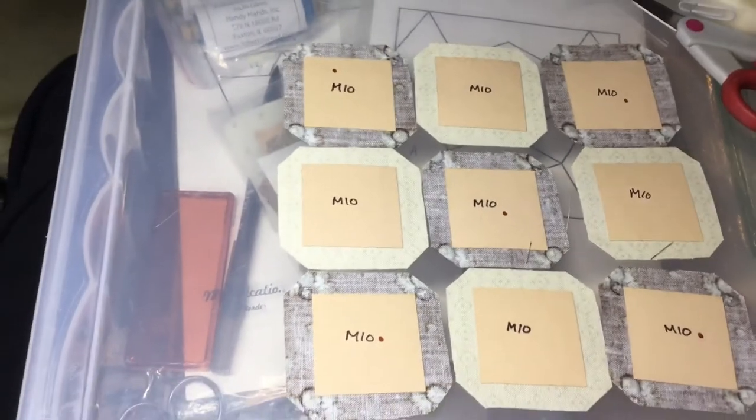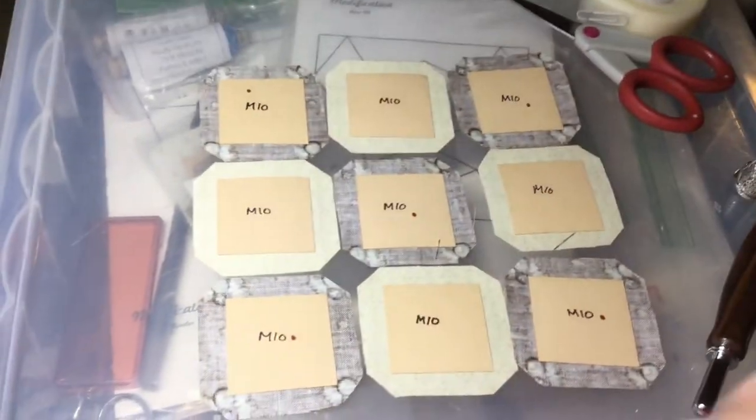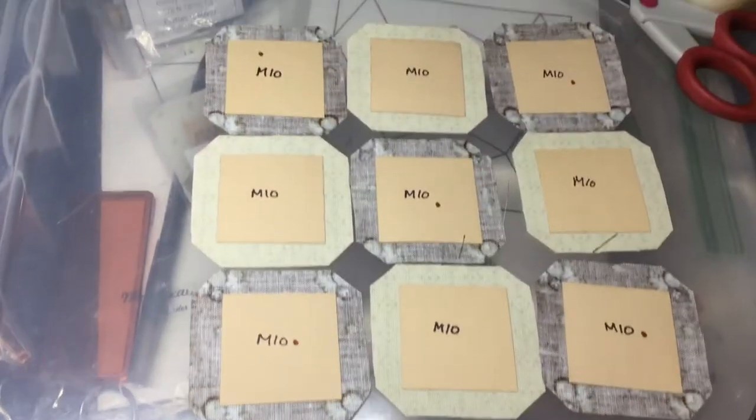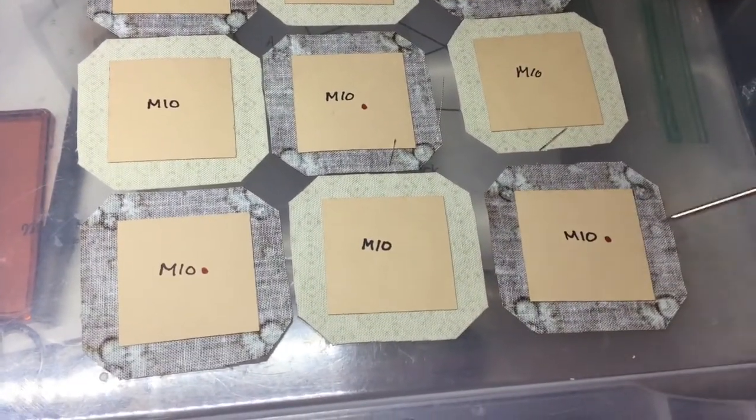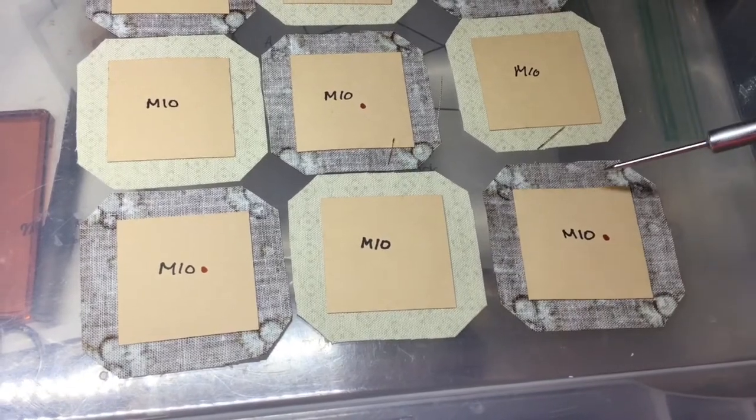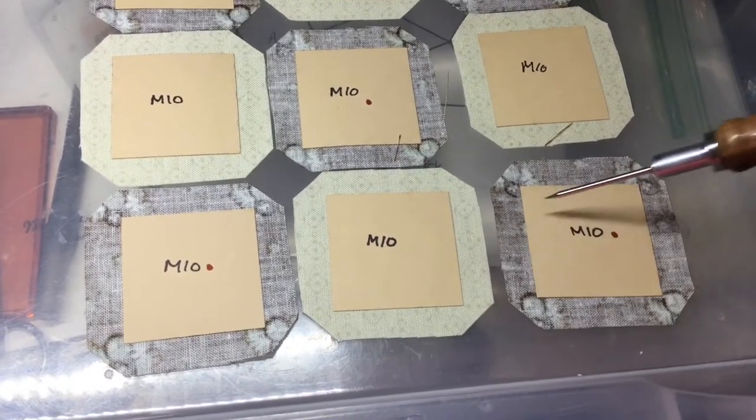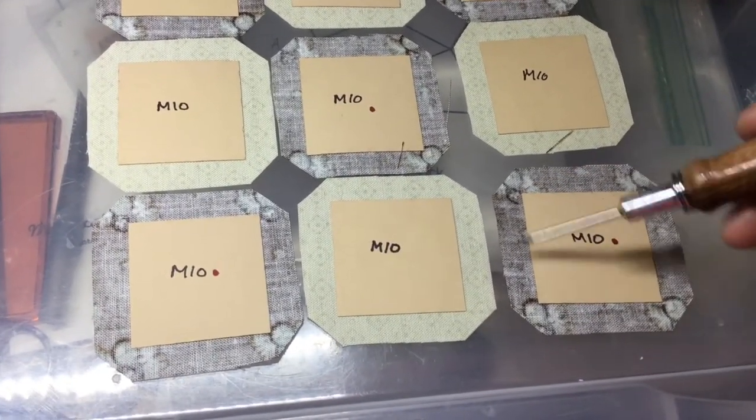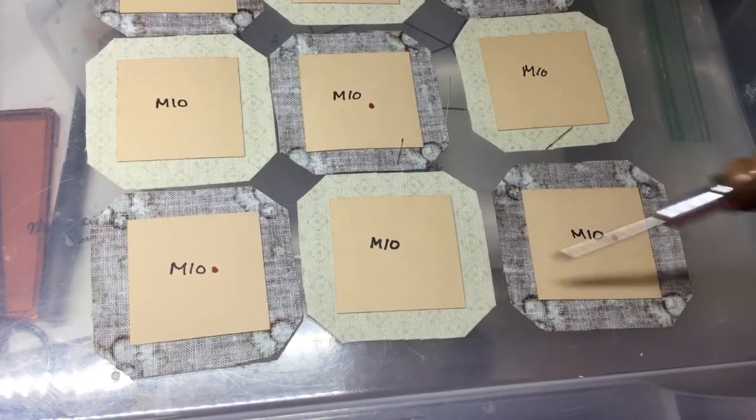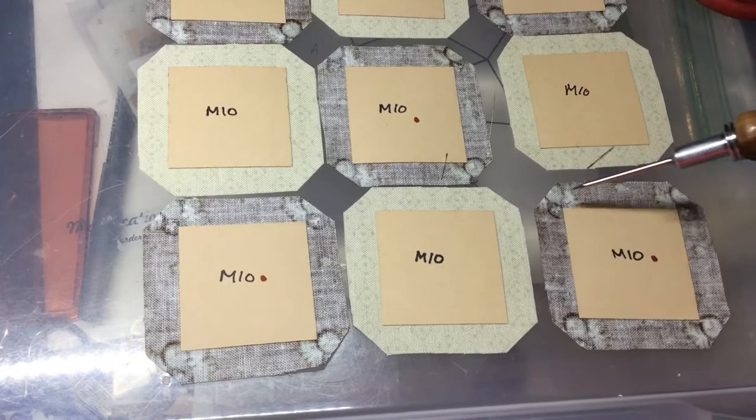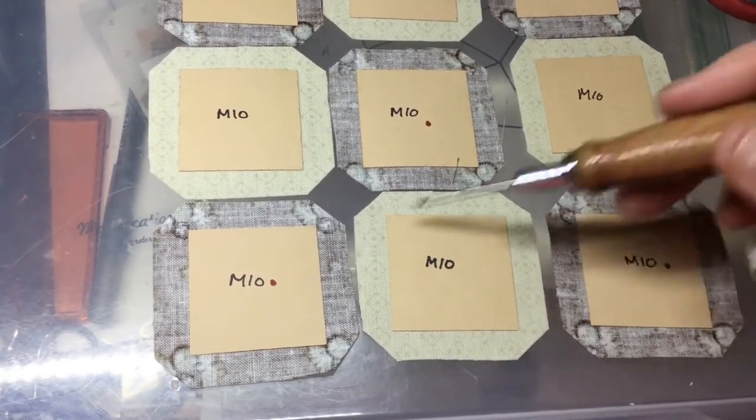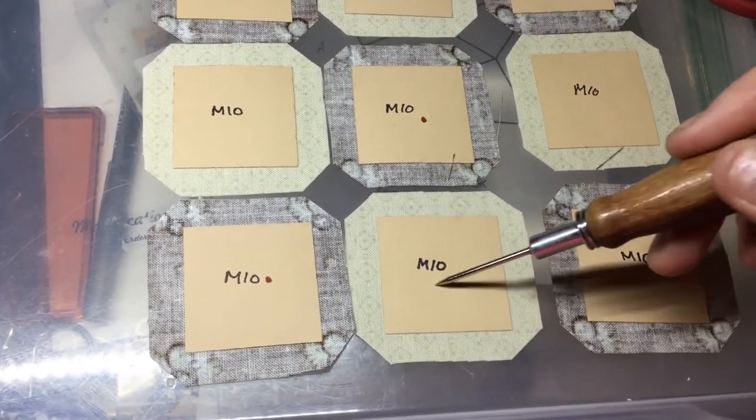But you're also going to alternate the basting as well. And what that means is, on one color, you're going to do one side first and then the other side, and you're going to do the opposite on this color. So if you do the sides first and then the top and bottom on the brown or the focus fabric, then you would do the top and bottom and then the sides on the background, or so on and so forth.